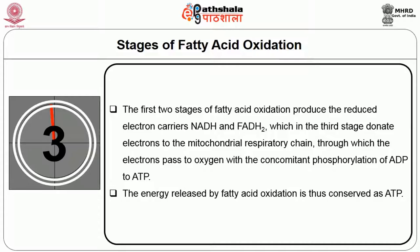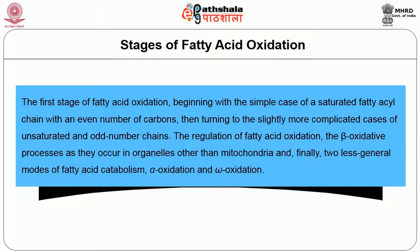The first stage of fatty acid oxidation begins with the simple case of a saturated fatty acid chain with an even number of carbons, then turns to the slightly more complicated cases of unsaturated and odd-numbered chains. The regulation of fatty acid oxidation includes beta oxidative processes occurring in organelles other than mitochondria. Two lesser-known modes of fatty acid catabolism are alpha oxidation and omega oxidation.